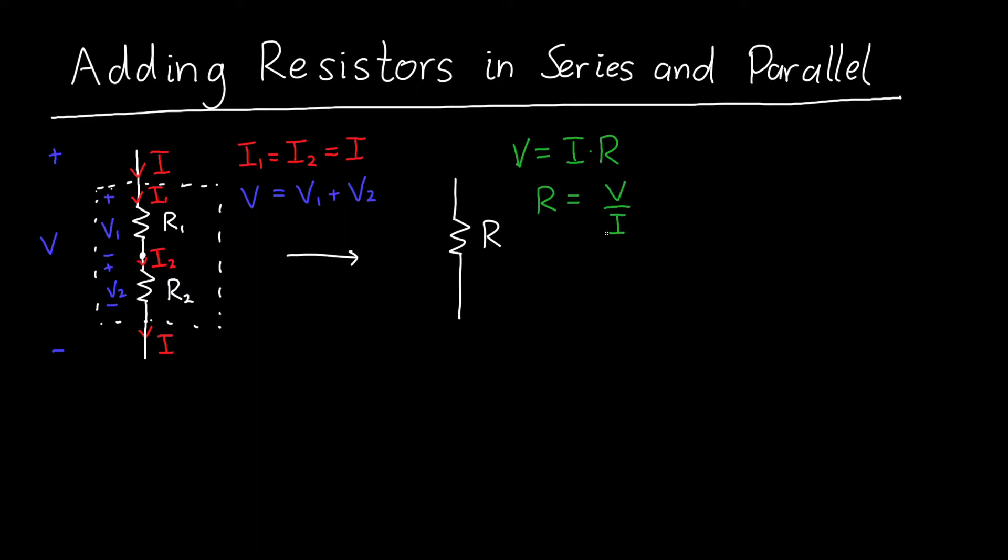So if we know what the total voltage is, and we know what the total current is, we can divide them to create a resistance. So if we do that for these two resistors, we get that R is equal to V, which we just said was V1 plus V2 divided by I.